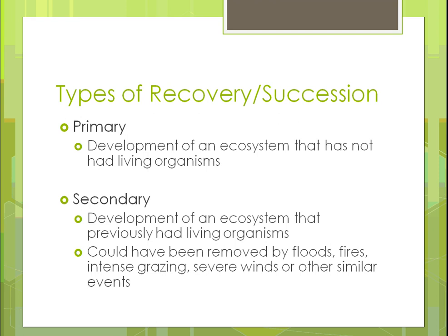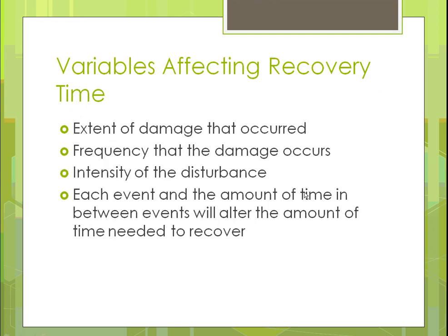Secondary succession is where you're developing an ecosystem that previously had living organisms — you're trying to change it. Examples include a flood that wiped out the entire ecosystem, a fire that burned it out, intense grazing like in the prior picture, or winds that blew the soil away. It's a second time, not the first time, that you're trying to develop an ecosystem.